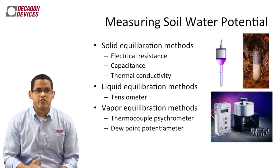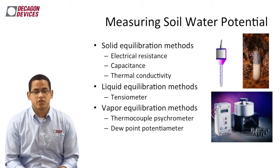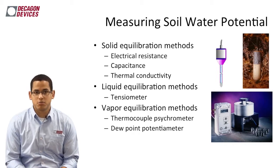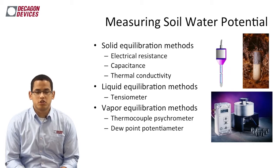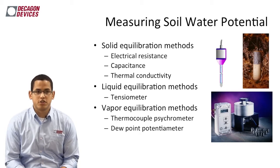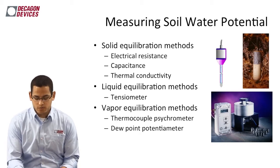The third category is vapor equilibration methods, which include a thermocouple psychrometer or a dewpoint potentiometer. With both instruments, we are essentially measuring the relative humidity and using that measure to determine water potential.